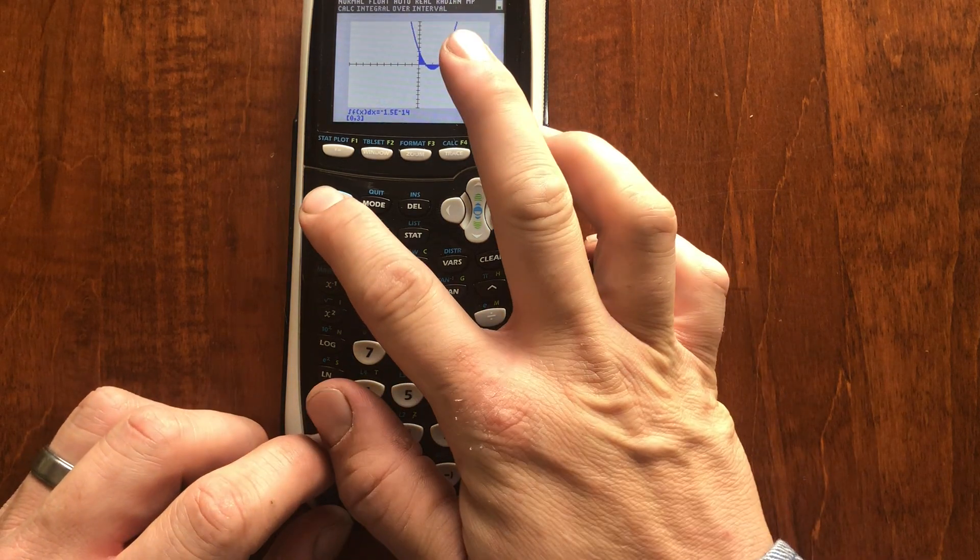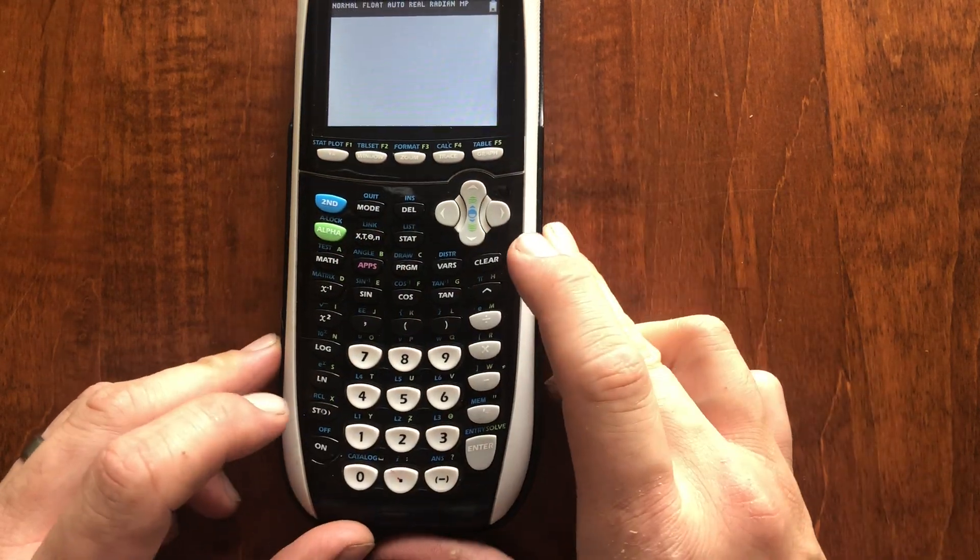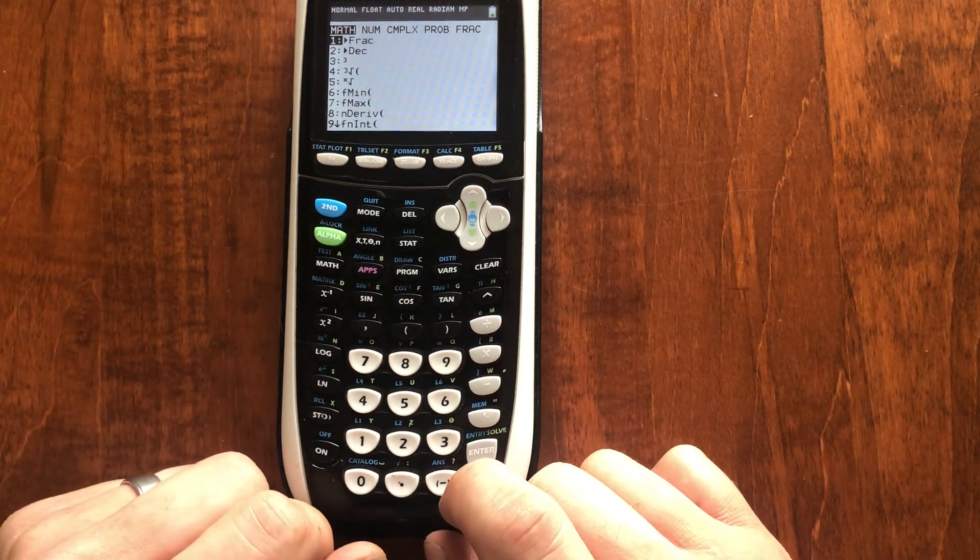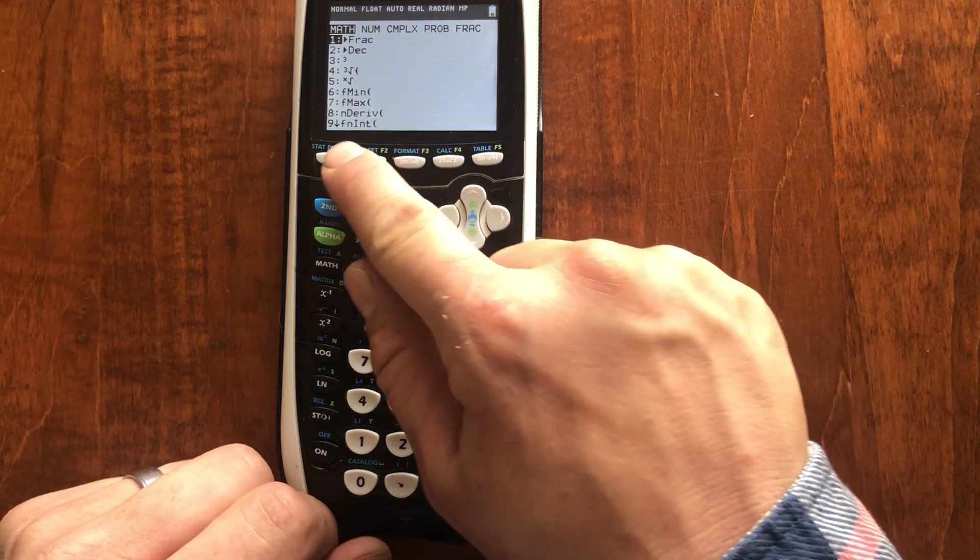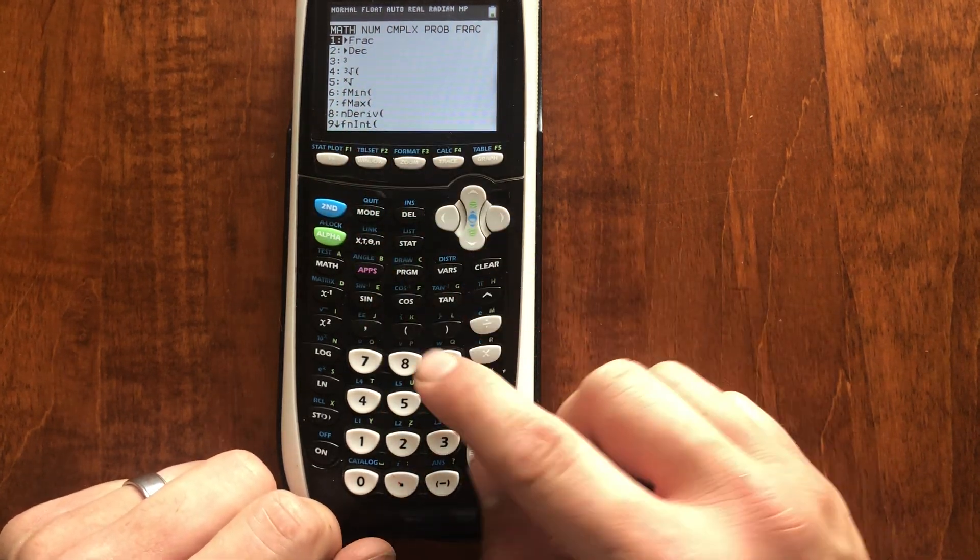But what if we don't want to integrate graphically? Let's just get out of our graphing mode here. Let's type math because that's what we want to do. fn int is function integrate. And you'll see our symbol here.